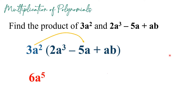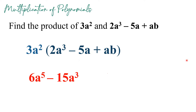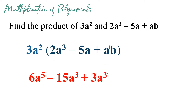For the second term, 3a squared times negative 5a: multiply the numerical coefficients 3 times negative 5 to get negative 15. Then a squared times a — since the exponent of a is 1, we add 1 plus 2 to get a cubed, giving negative 15a cubed. For the last term, 3a squared times ab: copy the 3, then a squared times a gives a cubed (2 plus 1 equals 3), and just copy variable b. So the final answer is 6a raised to 5 minus 15a cubed plus 3a cubed b.